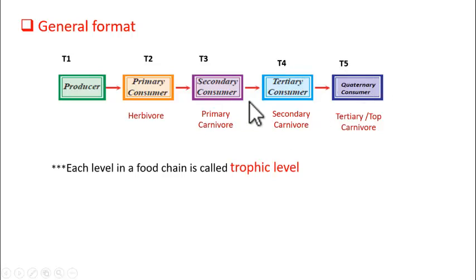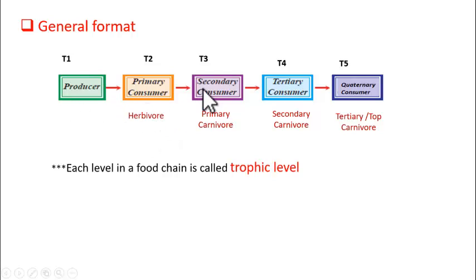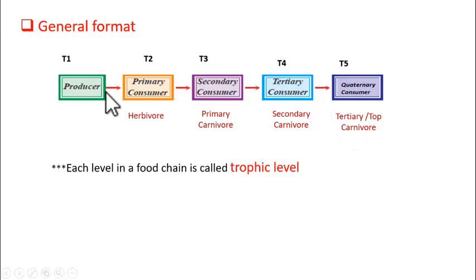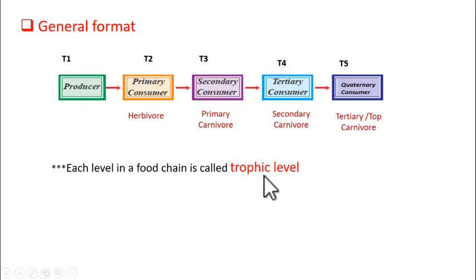The consumers have other names too. Primary consumer is called a herbivore because it feeds on the producer. Secondary consumer is a primary carnivore. Tertiary is a secondary carnivore. Quaternary is a tertiary carnivore. Each level of the food chain is called a trophic level.